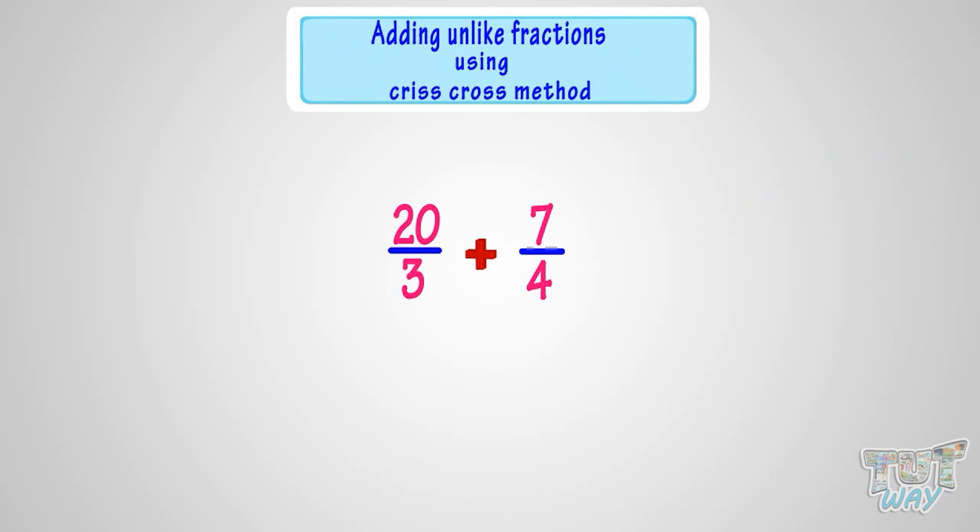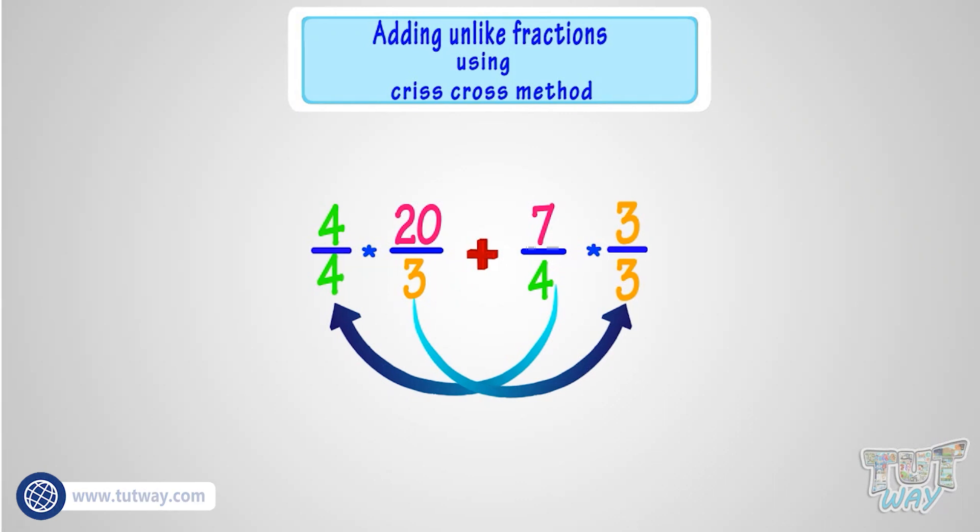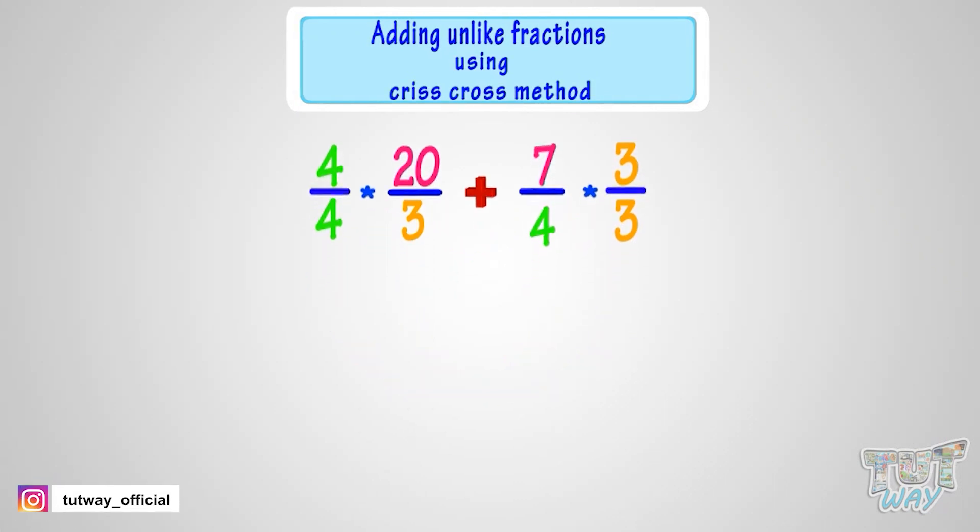Now we will multiply both the numerator and denominator of 20 by 3 with 4, and we will multiply both the numerator and denominator of 7 by 4 with 3. So it becomes our criss-cross. 20 multiplied by 4 equals 80. 3 multiplied by 4 equals 12. So it becomes 80 by 12.